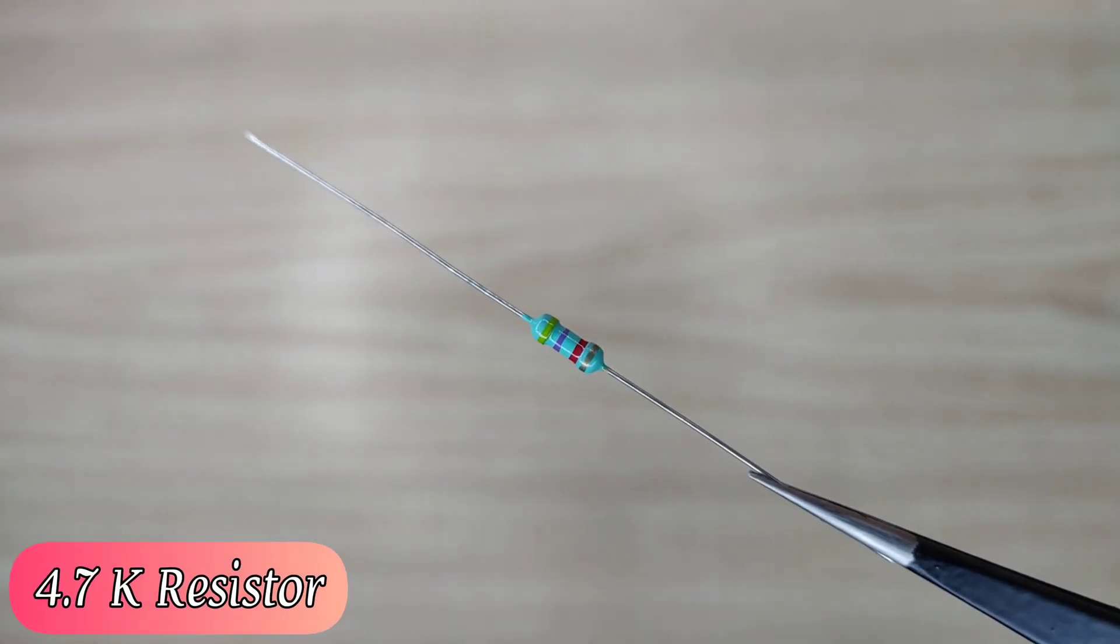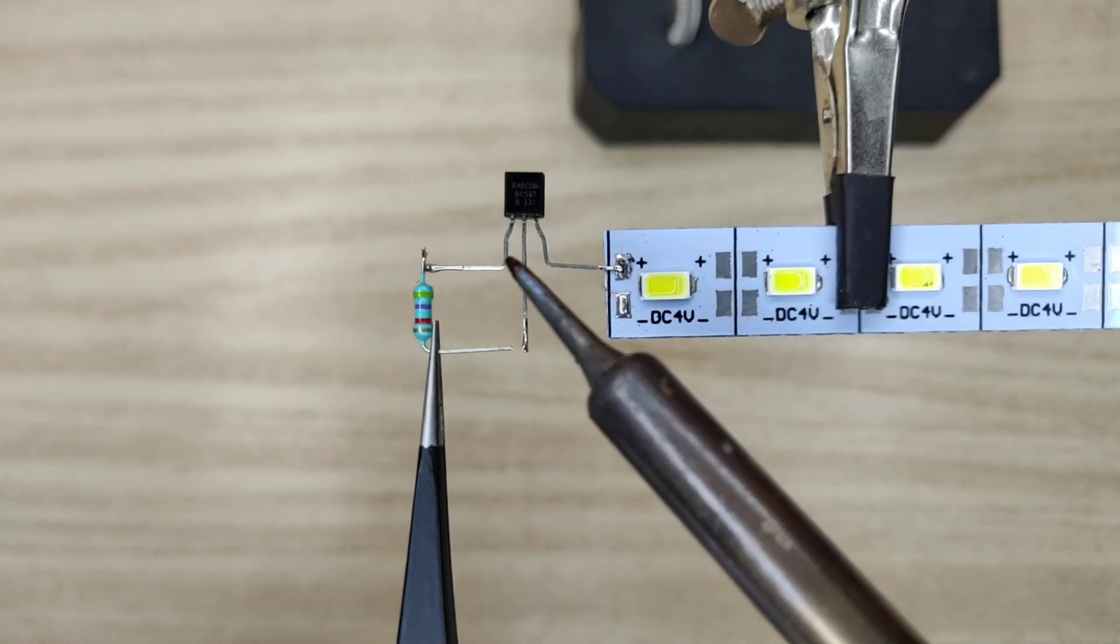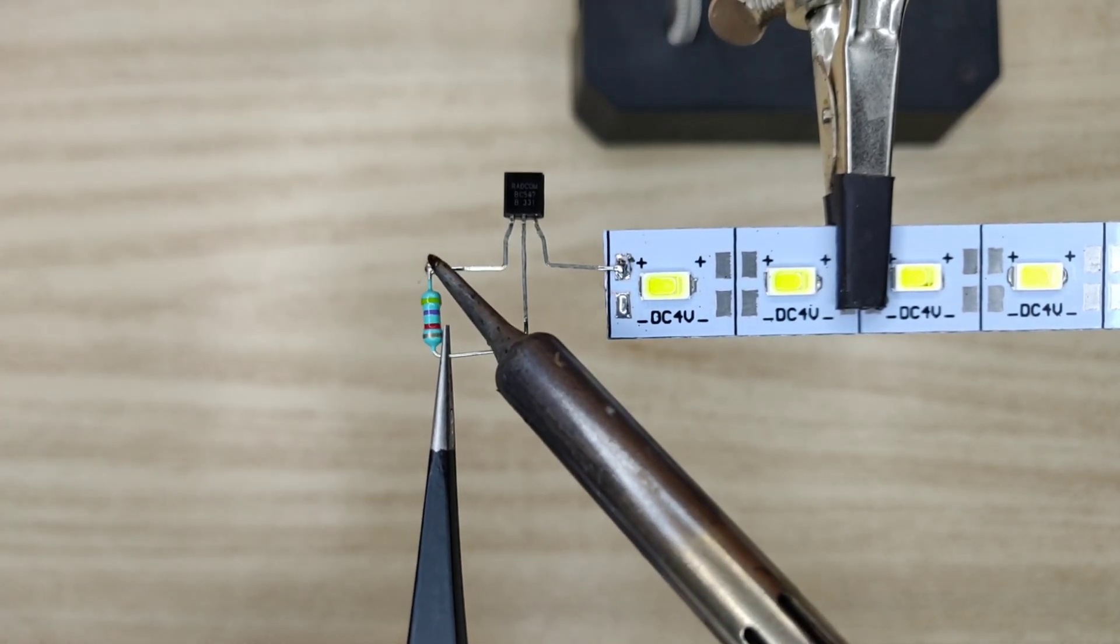Take a 4.7 kilo ohms resistor. Solder between collector and base of transistor.